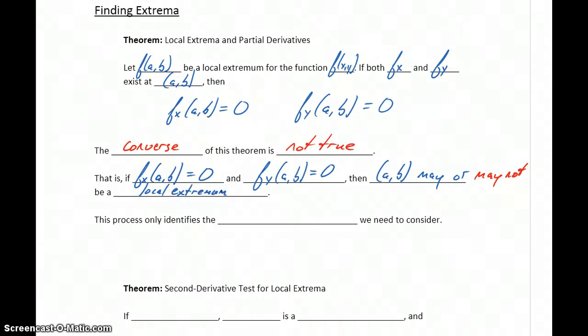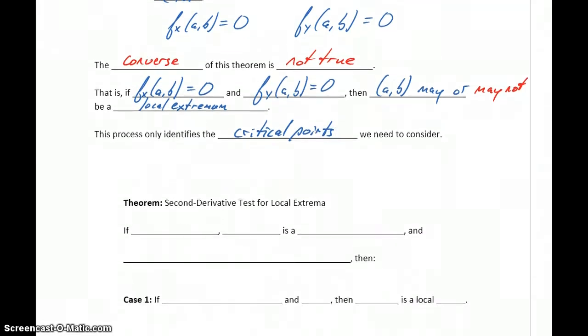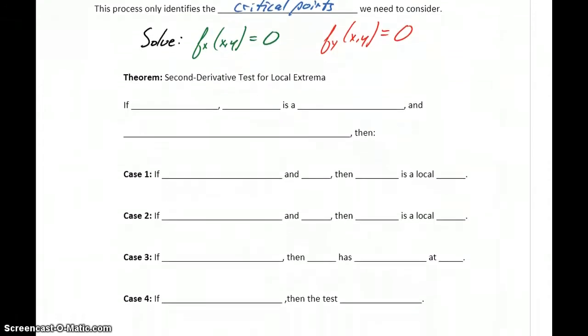But it does give us a starting point, meaning the first thing that we want to do is identify these critical points, whether there's one or more. So we want to identify these critical points by solving the first derivative with respect to x set equal to 0, and the first derivative with respect to y set equal to 0. Finding the x-y coordinate pairs that give us these results are going to give us candidates to consider as local extrema, but we'll have to test a little bit more to come up with a specific classification or to verify that they are in fact local extrema.